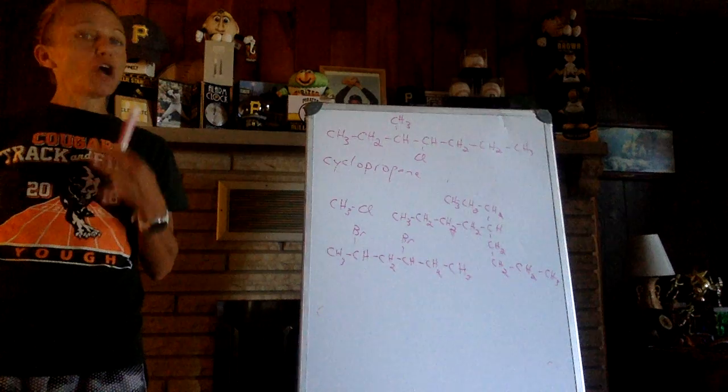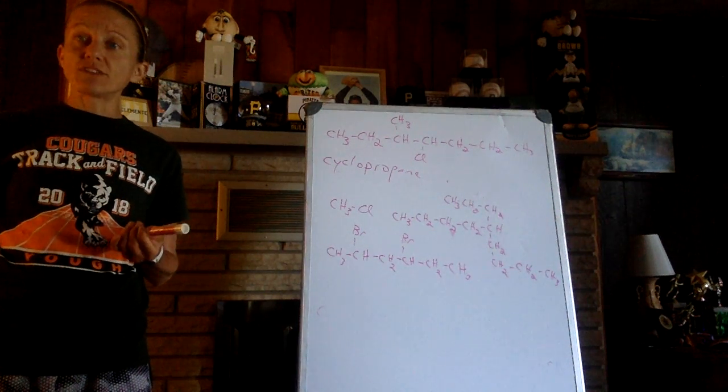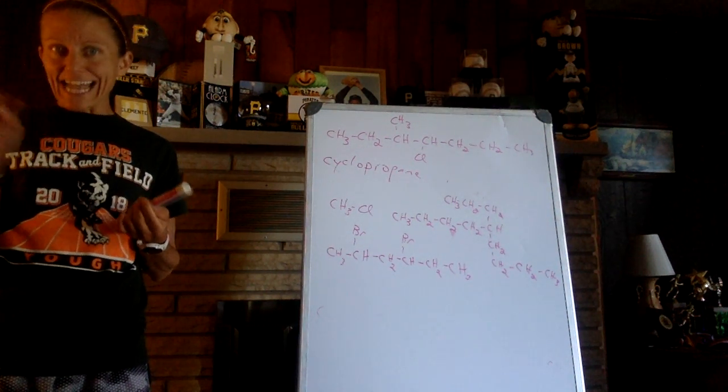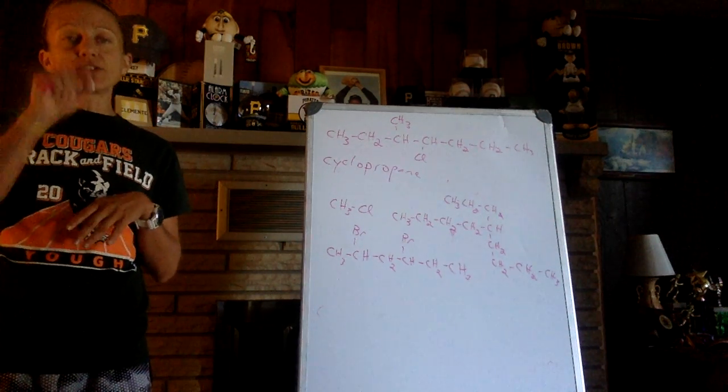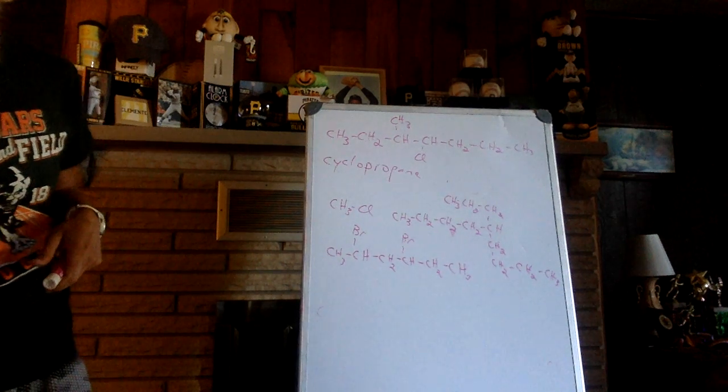We will talk more about benzene later. But just to know, don't expect those carbons to have four bonds. You'll see it drawn as like the nut, the sixth side with the circle in the middle. It's a nice way to show it. A carbon at each corner, and the circle in the middle represents the funky sharing of electrons.